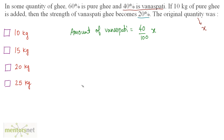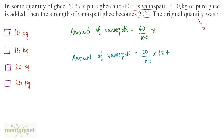Only the relative percentage of vanaspati changes. After adding 10 kg of pure ghee, the amount of vanaspati is equal to 20% of the total quantity. So: 20/100 × (X + 10). Since the amount of vanaspati remains the same, I can equate the two equations: 40/100 × X = 20/100 × (X + 10).